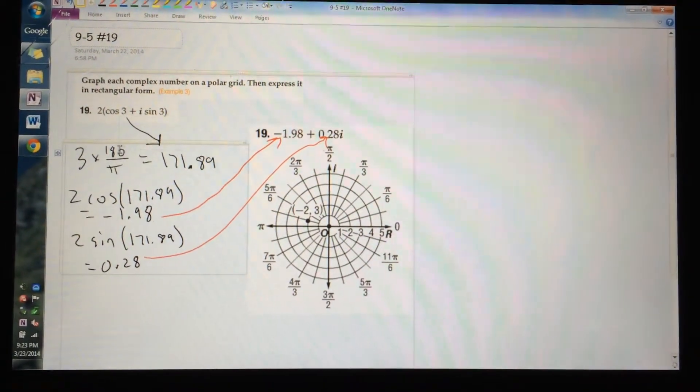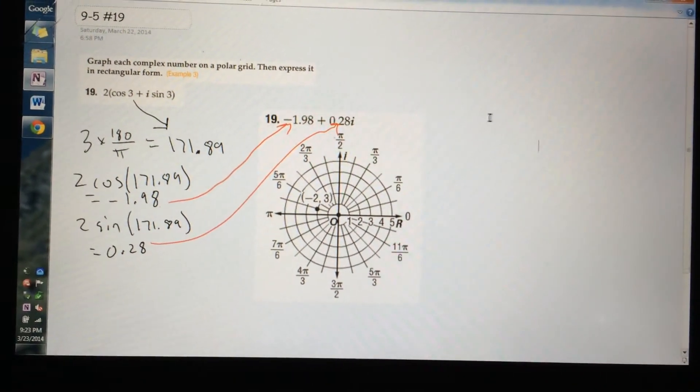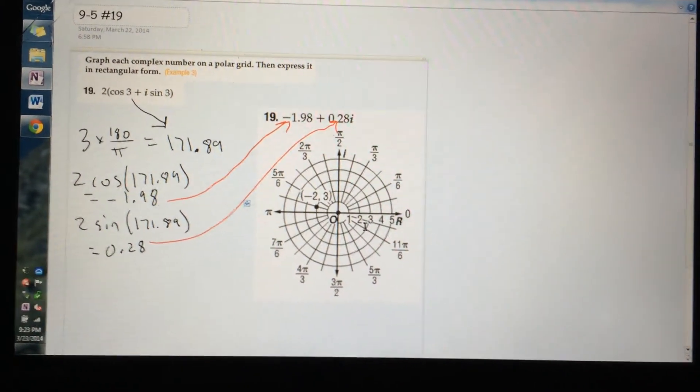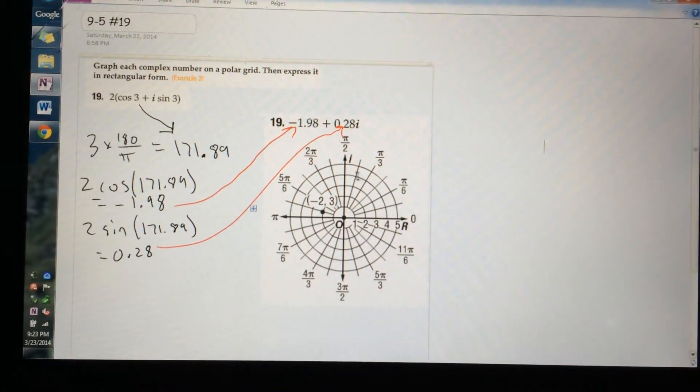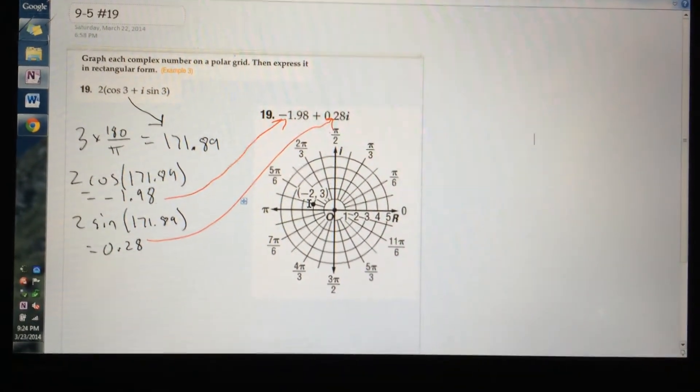I did 3 times 180 over π, and that's 171.89. So once you get that, you can go on the 2 ring right here and go to 171.89, which is almost to 180 degrees, right about here. And that's how you graph it.